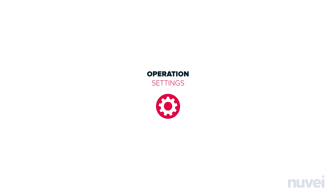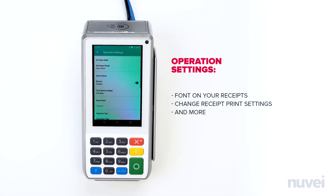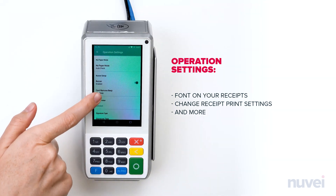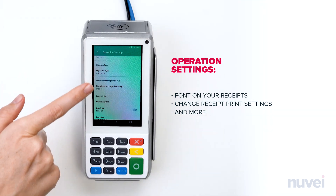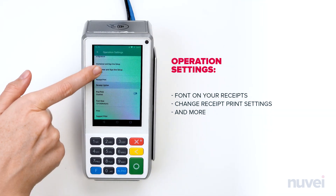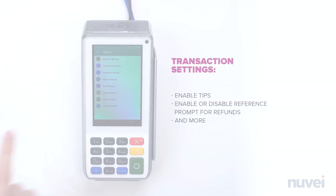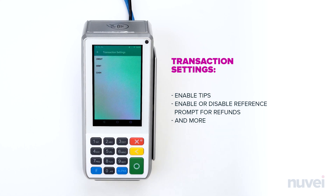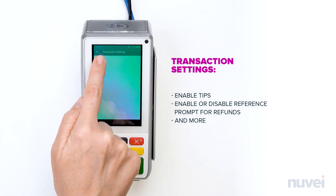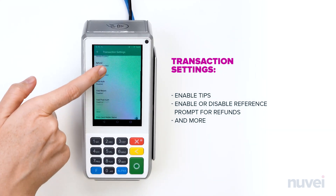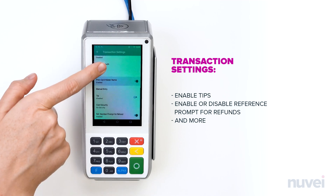Operations Settings. In the Operations Settings, you can adjust the font on your receipts, change receipt print settings and more. Transaction Settings. In the Transaction Settings menu, you can enable tips, enable or disable reference prompt for refunds and more.